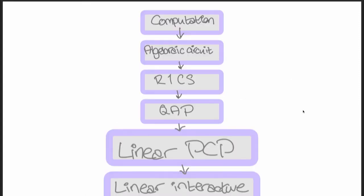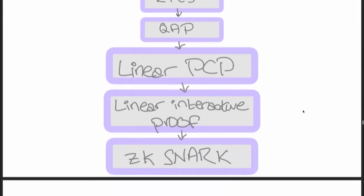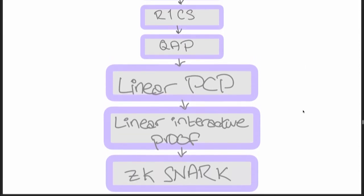This leads us to the last three things in the diagram which people use to explain SNARKs. So far what we've done is just encoded a function into a form that's easy to prove SNARKs about. This is where all the cool stuff comes in and where the bulk of the cool results are.